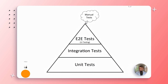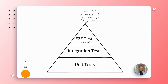It basically says that your foundation should be that you have a bunch of unit tests. On top of that you have some integration tests, and then you have even fewer end-to-end tests. You might even have some manual tests, but that depends a whole lot on what type of app you're building. I would always recommend that you go with automatic testing when you can.